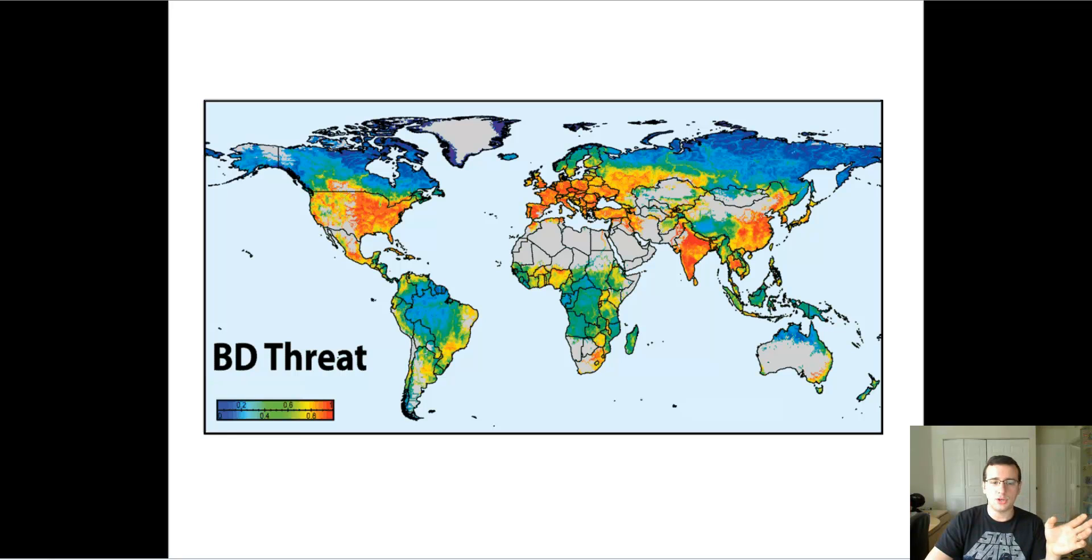Basically, the cold areas of Canada and Russia, a little bit of Australia, a little bit of Africa, and a little bit of the Amazon. The rest of the world is suffering at the hand of biodiversity changes because humans are pretty much taking over those habitats and destroying much of the diversity that was there before.